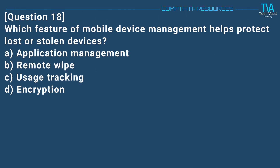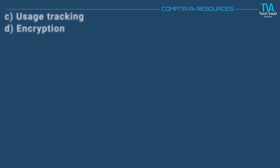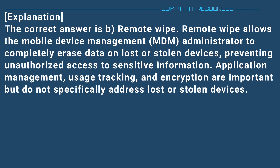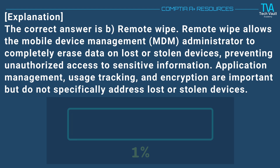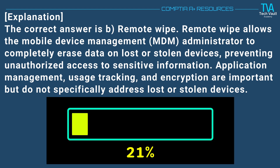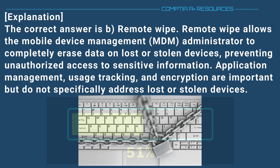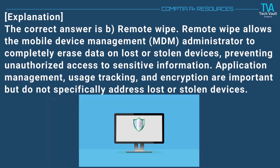Question 18. Which feature of mobile device management helps protect lost or stolen devices? A. Application management. B. Remote wipe. C. Usage tracking. D. Encryption. The correct answer is B. Remote wipe. Remote wipe allows the MDM administrator to completely erase data on lost or stolen devices, preventing unauthorized access to sensitive information. Application management, usage tracking, and encryption are important, but do not specifically address lost or stolen devices.